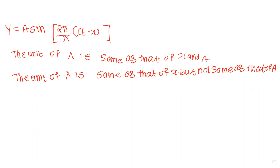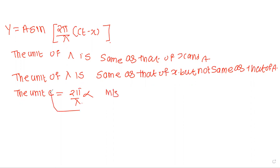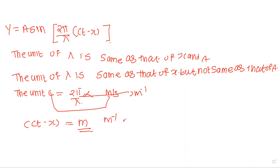The third option: unit of C is same as that of 2π/λ. This is incorrect — the unit of C is meter per second, while 2π/λ is meter inverse. The fourth option: unit of ct - x is same as 2π/λ — also incorrect, since ct - x is in meters and 2π/λ is meter inverse.